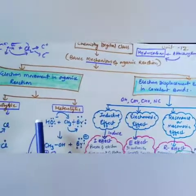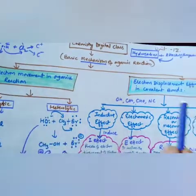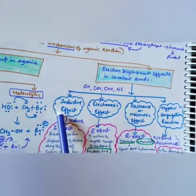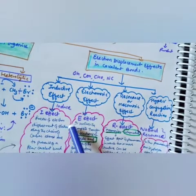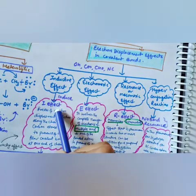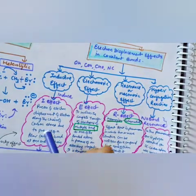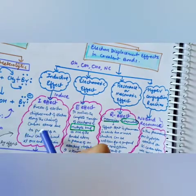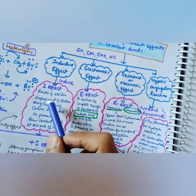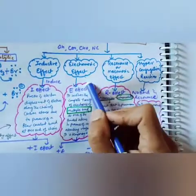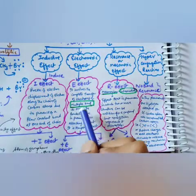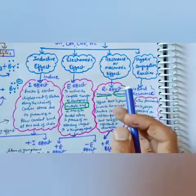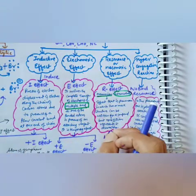Electron displacement is very important in organic reactions. Because of four effects, electrons start displacing. The first is the inductive effect — an effect induced by an electronegative group which withdraws electrons from the hydrocarbon. Second is the electromeric effect, in which a multiple bond changes to a single bond. Third is resonance, where an intermediate is formed — the first and last structures are the main structures, and intermediate structures form in between.